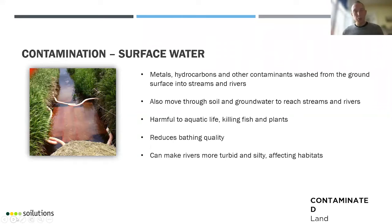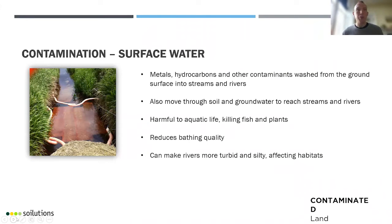Surface water can also be impacted — contamination can reach surface water very easily, simply washing over the ground after rainfall straight into a stream or river. This can harm aquatic life; the same pollutants that are toxic for humans are likely to be toxic for fish and animals living by the water. It can also impact bathing quality. There have been concerns this year about sewage being pumped into the sea, but there are plenty of other contaminants that end up in the sea as a result of contaminated ground.